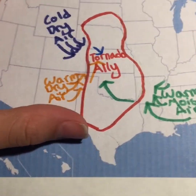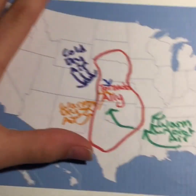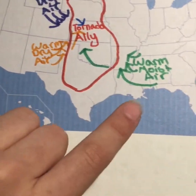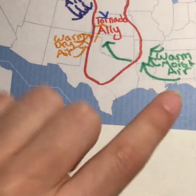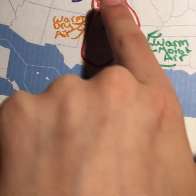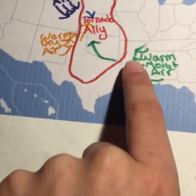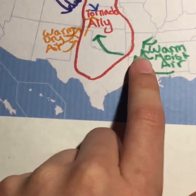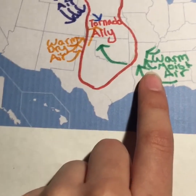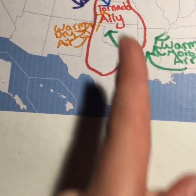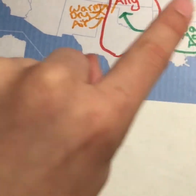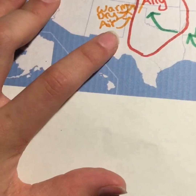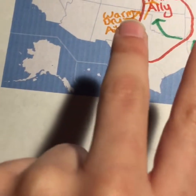Why is it called Tornado Alley? Well, first of all, because of the different air that travels here. So first, let's start out down here, which is tropical air. It's very humid, so warm moist air is going to be pushing up. It's not too warm yet in tornado season, which is from late April to early June, but tornadoes can happen any time of year. Warm moist air pushes up this way, from the side of Texas and up.